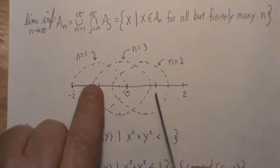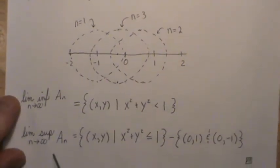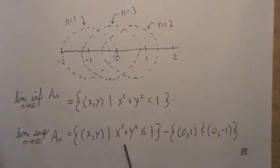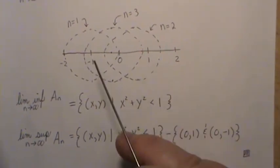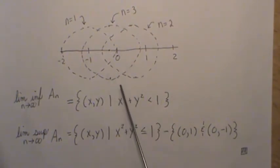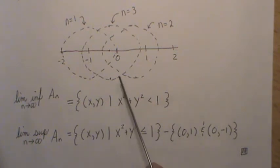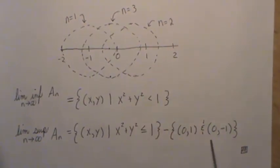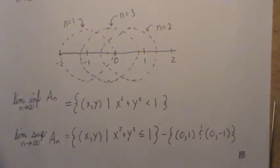So the limit supremum of Aₙ is all x and y such that x² + y² ≤ 1 — the closed unit disk — but we must subtract out the two points (0, 1) and (0, -1), since those points never make it into any of the circles. That gives us the limit infimum and limit supremum for Example 1.